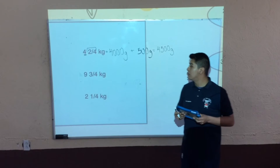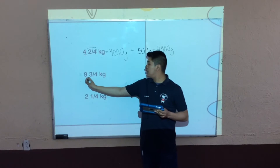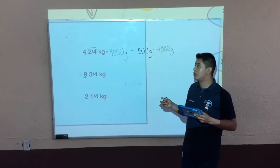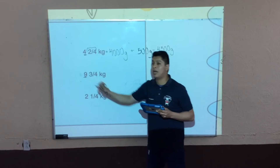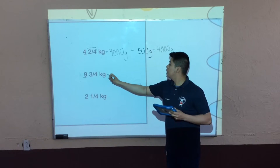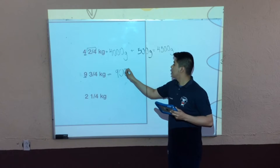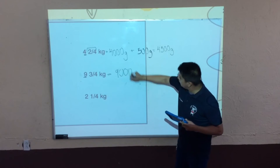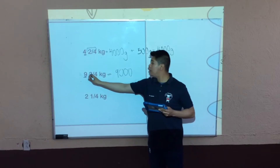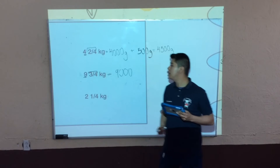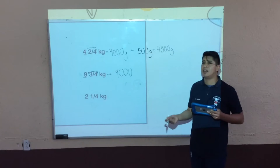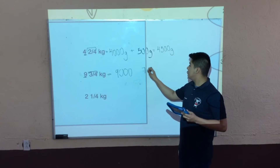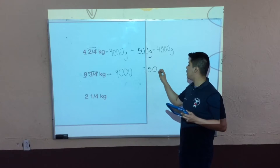Ahora nos vamos con la segunda, con los enteros. Tenemos 9 enteros. Recuerden que el entero siempre va a pasar a 1000, entonces tendríamos 9000. Ahora tenemos la parte de la fracción: tenemos 3 cuartos. ¿Cuánto equivale 3 cuartos de kilogramos a gramos? Equivale a 750 gramos.